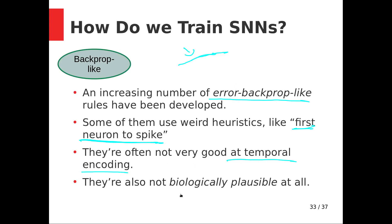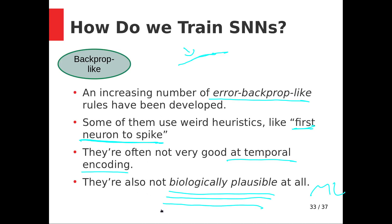These methods are also not biologically plausible — you can decide how much you care about that for machine learning purposes. But we have good reason to think the brain does not have any kind of error backpropagation channel, and yet brains are still able to learn complicated rules and behaviors without it. If nature didn't see the need for this, it's a fair question to ask why we do.